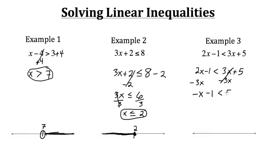That is less than 5. Now to isolate x, we add 1 to both sides, giving us negative x is less than 6.